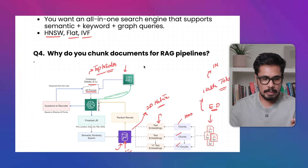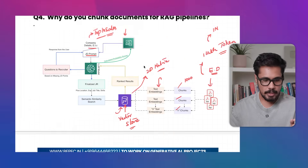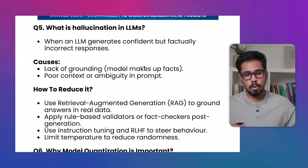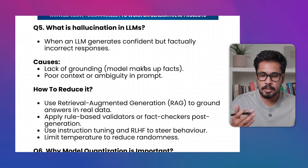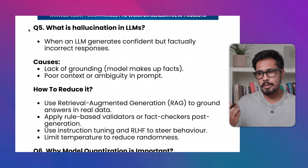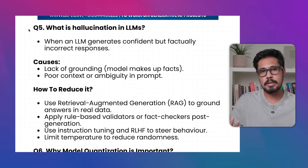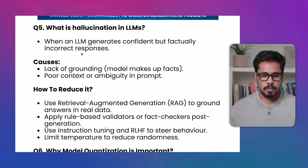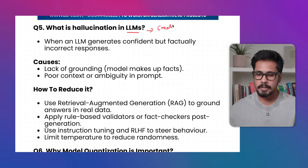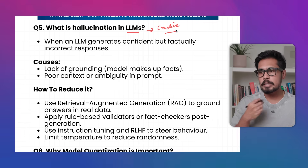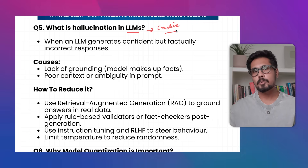The next question is: what is hallucination? Hallucination is when your LLM model generates an answer confidently — even for an incorrect response. Even if it doesn't know the answer, it can make up an answer.